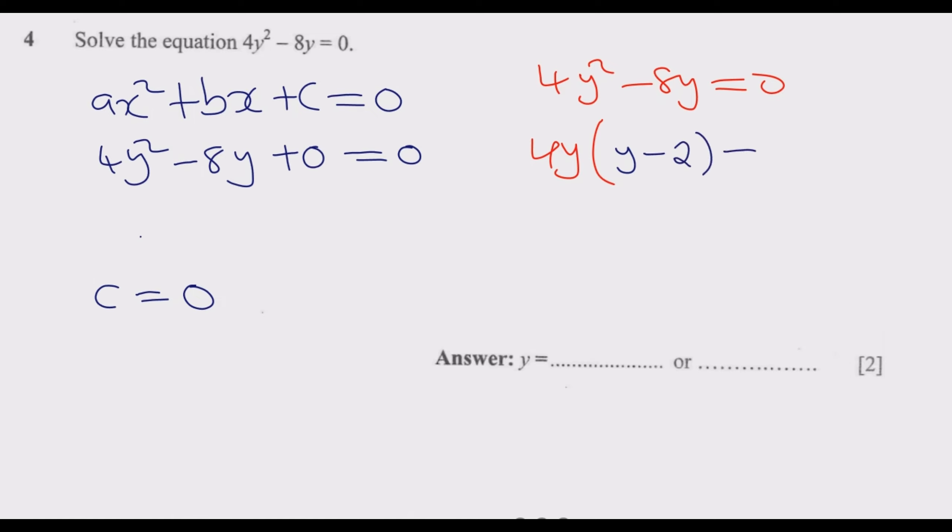This is equal to 0. So what does this tell us? This tells us it's basically either this one is equal to 0 or this one is equal to 0. Hence 4y equals 0 or y minus 2 equals 0. Because if any of this is equal to 0 the answer will be 0, because 0 times anything is basically 0. That's the implication.